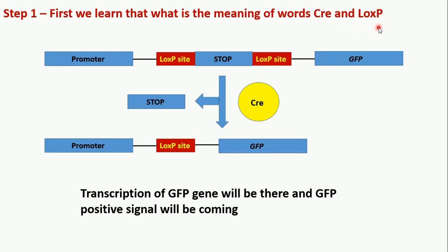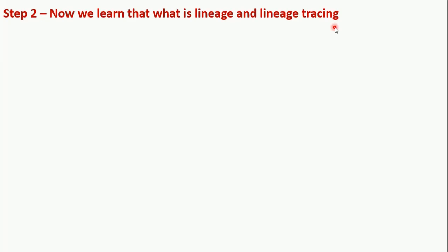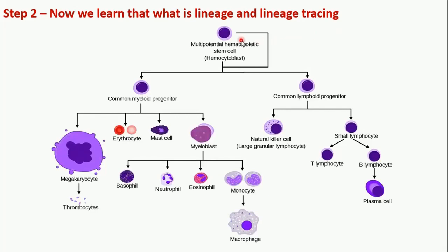In the second step we will learn what is the meaning of lineage and lineage tracing. I will explain it with a very interesting and simple example. We have the hematopoietic stem cell present in bone marrow, and this hematopoietic stem cell can give rise to different cell types — for example, the common myeloid progenitor and the common lymphoid progenitor — and these progenitors convert into many different cell types.